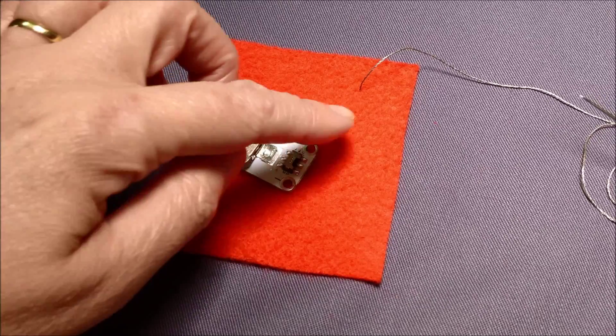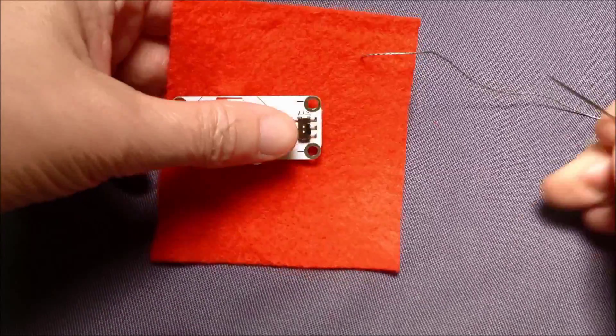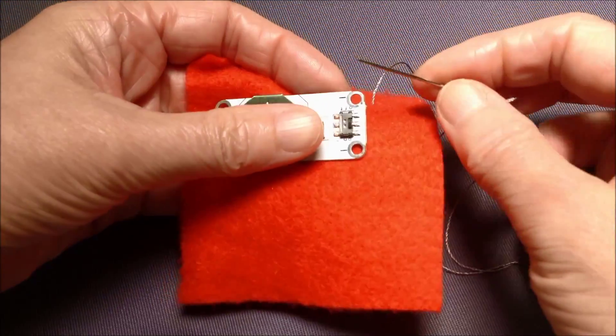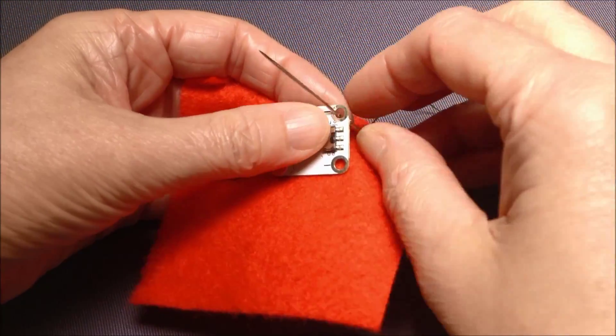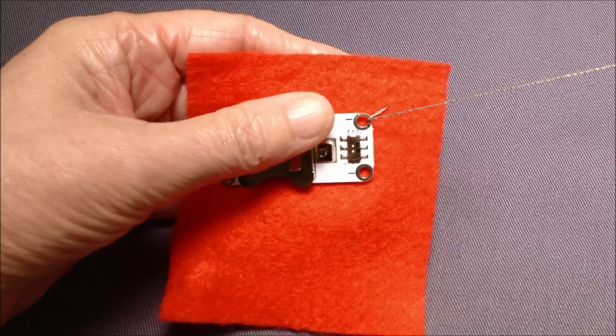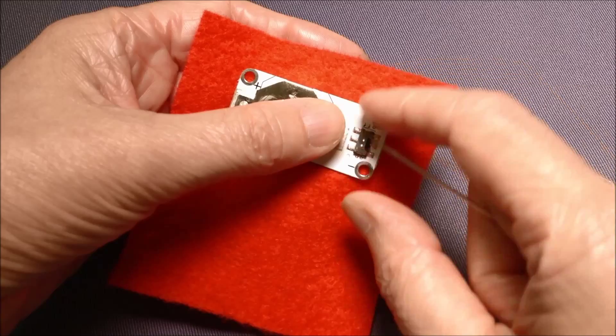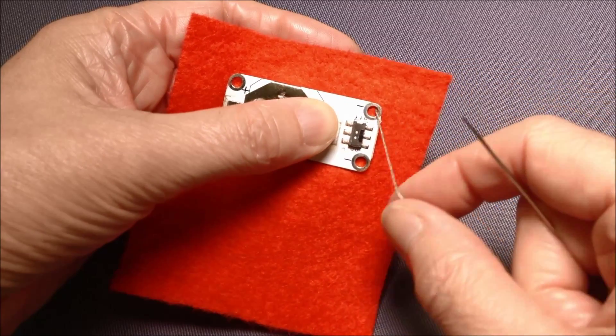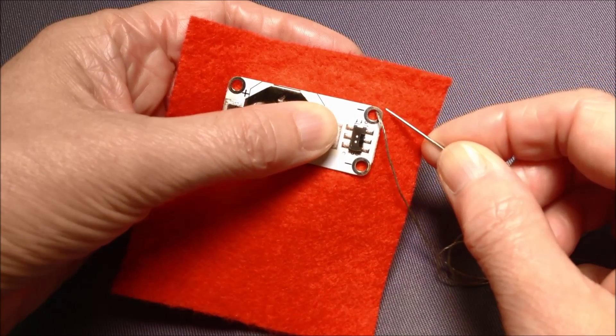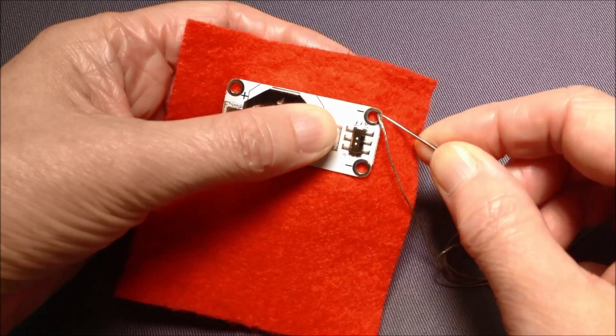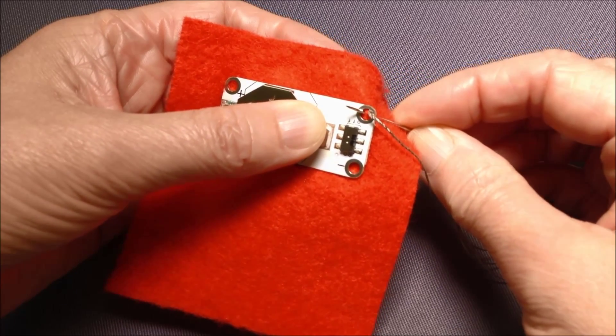To start the over sewing stitch, I brought my thread up onto the right side of the fabric and I'm just going to pop the needle through the hole in the cell holder. Just holding it with my thumb and my finger into position on my fabric, and then taking my needle to one side into the fabric and up through into the hole again.